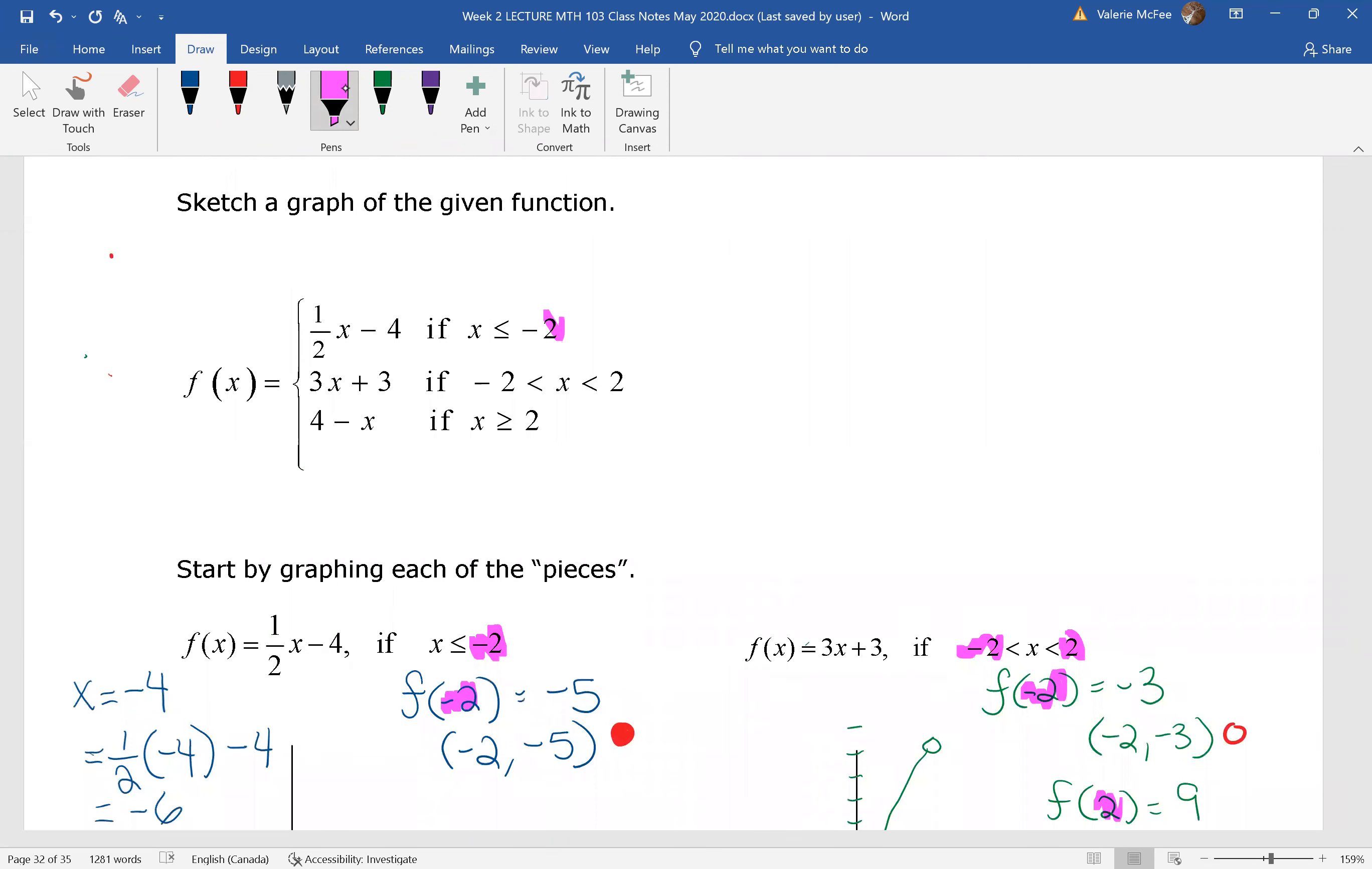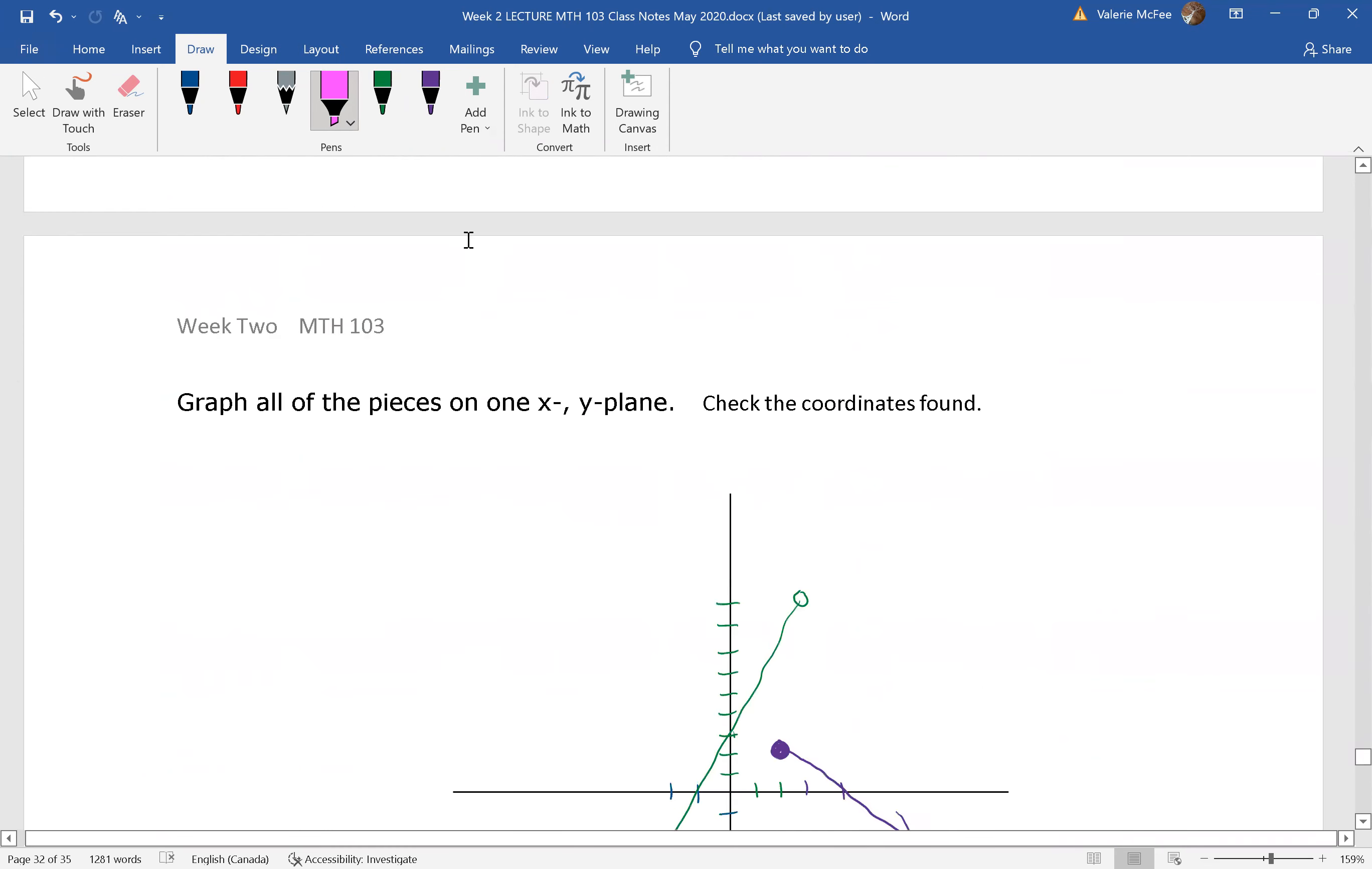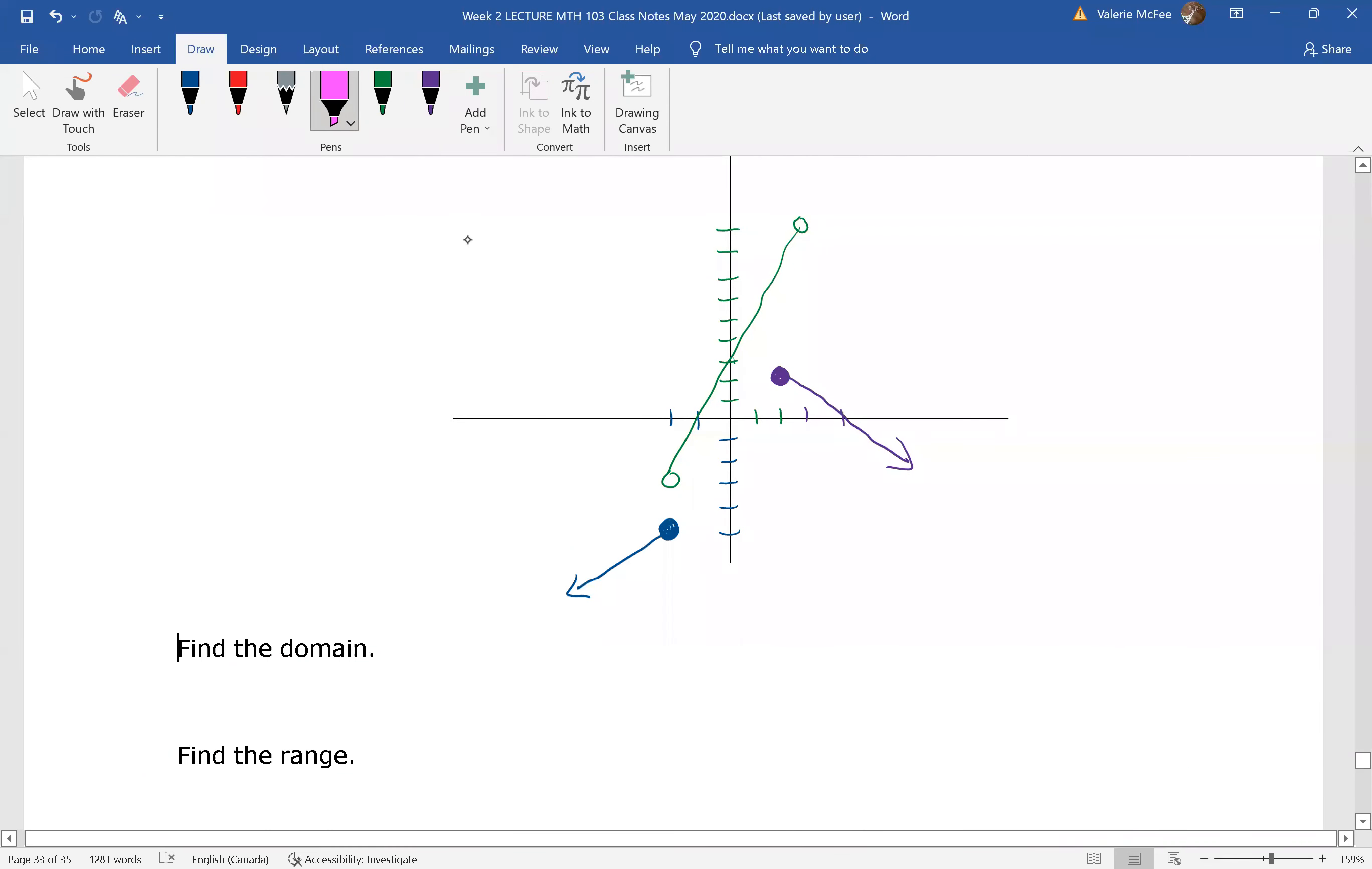We see that x has to be less than or equal to negative two, so that means it's heading to negative infinity, all the way to greater than or equal to two, heading to positive infinity. So if we look at our graph, we can see that it's heading in both directions. The domain is the set of all real numbers.